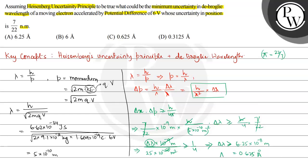So the expression for Δλ is: Δλ ≥ 0.625 Å. Since the question asks for the minimum uncertainty, the minimum value of Δλ is 0.625 Å. This is the required answer, which is correctly given in option C. I hope you understood the concept well. Best of luck!